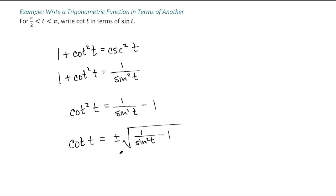Well, I can't have two different things. And this is why this part is so important, for t between pi over 2 and pi. The question is, what is my cotangent going to be? Is it going to be positive or is it going to be negative?